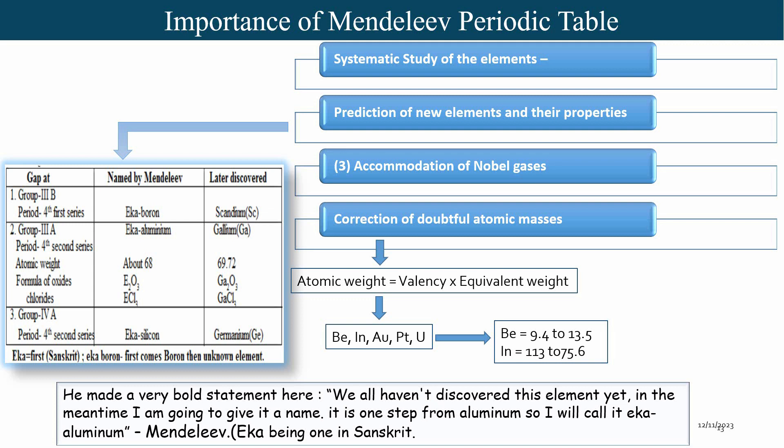For example, he corrected the atomic masses of beryllium, indium, gold, platinum, and uranium. For beryllium, the atomic mass earlier reported was 9.4, and Mendeleev corrected it to 13.5. Similarly, the mass of indium was corrected from 75.6 to 113.